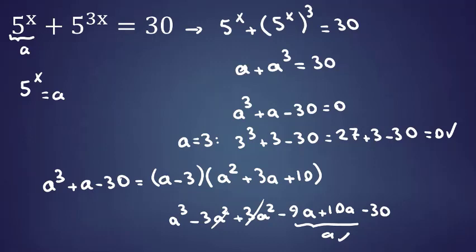This is one of the most useful ways. You check the numbers, for example a equals 3 works. So a minus 3 is one factor. Then you can find the next factor, which is a squared plus 3a plus 10. This equals 0.